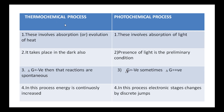Coming to differences between thermochemical process and photochemical process: thermochemical processes involve absorption or evolution of heat, while photochemical processes involve absorption of light. Thermochemical processes occur in the dark, while photochemical processes occur only in the presence of light. In thermochemical processes, when delta G is negative the reaction is spontaneous; in photochemical processes, delta G can sometimes be positive. Energy increases continuously in thermochemical processes, while in photochemical processes it occurs in discrete electronic stages.